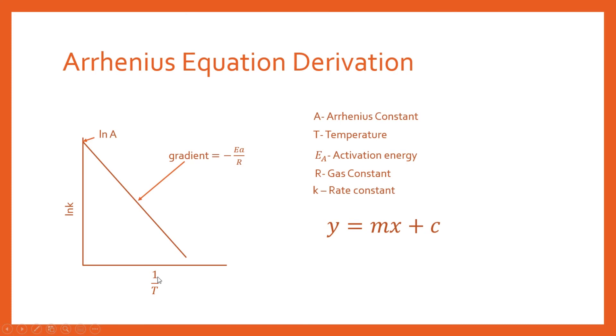Our x is our inverse temperature 1 over T. And we've got an intercept which has been defined as ln A, where A is your Arrhenius constant.